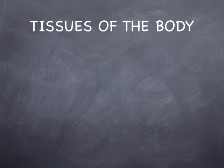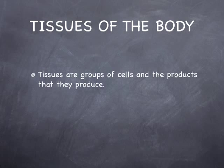When most people think of tissues, they think of a group of cells. But we need to begin to think that yes, it is a group of cells, but it's more than that. Tissues are groups of cells, but also products that the cells produce. In many tissues, we see an accumulation of material that is an essential part of the tissue but isn't a living cell.